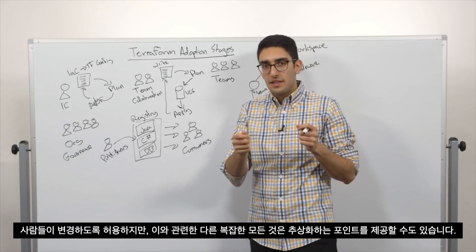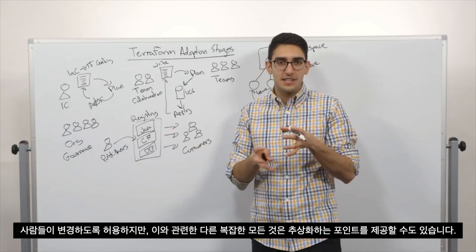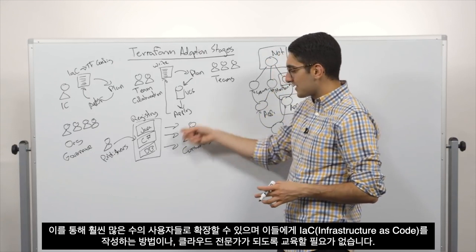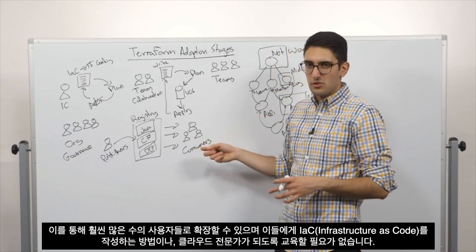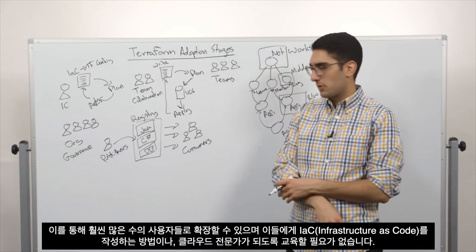So we might give them a few knobs that people are allowed to tweak, but then otherwise abstract all the other complexity related to it. And so this lets us scale up to a much larger number of consumers without really having to train and enable them how to write infrastructure as code or become cloud experts.